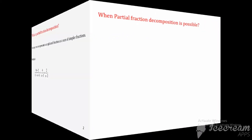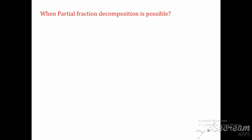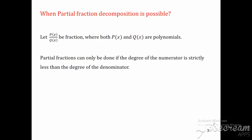Now let's understand when partial fraction decomposition is possible. Consider the fraction p/q where both p and q are polynomials. We say partial fraction decomposition is possible only if the degree of the numerator is less than the degree of the denominator. That is, if degree of p(x) is less than degree of q(x), then partial fraction decomposition is possible.